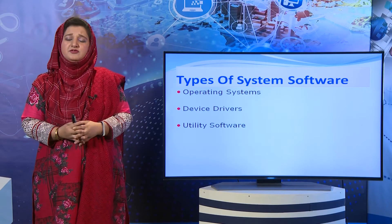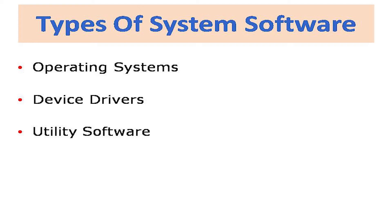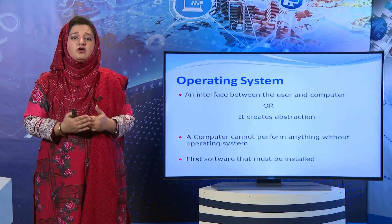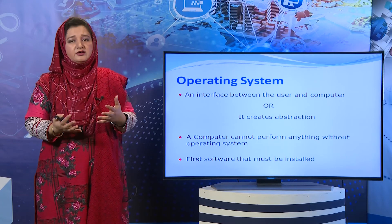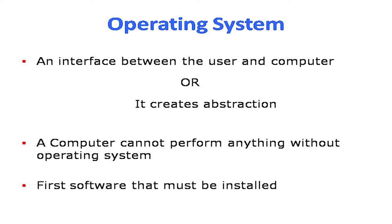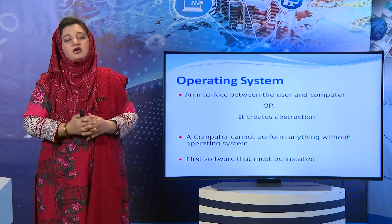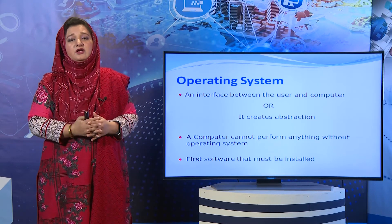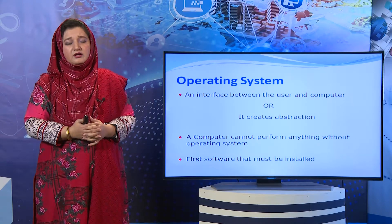Types of system software — there are three types: سب سے پہلے operating system، دوسرا device drivers، اور تیسرا utility programs. Operating system ایک interface کے طور پر کام کرتا ہے between the user and the computer. یہ کہہ سکتے ہیں کہ it is an abstraction which hides the hardware components from the user. جب آپ operating system سے interact کرتے ہیں after starting your computer تو آپ کو یہ اندازہ نہیں ہوتا کہ CPU کیسے چل رہا ہے، hard disk کیسے چل رہی ہے، memory کیسے manage ہو رہی ہے، RAM کس طرح consume ہو رہی ہے۔